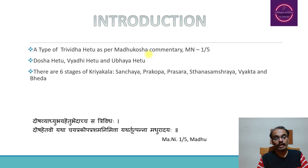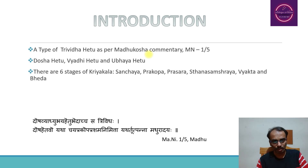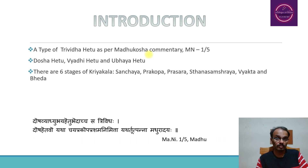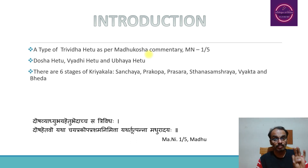We know that there are basically six stages of Kriya Kala: Sanchaya, Prakopa, Prasara, Sthanasamshaya, Vyakta, and Bhedha. This is according to Sushruta Samhita. Whereas according to Charaka Samhita, the normal variations are mentioned as Sanchaya, Prakopa, and Prasama.